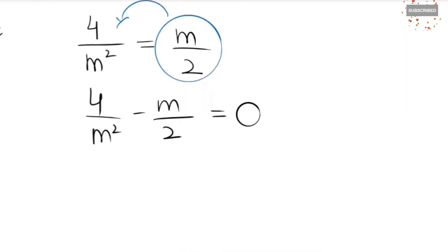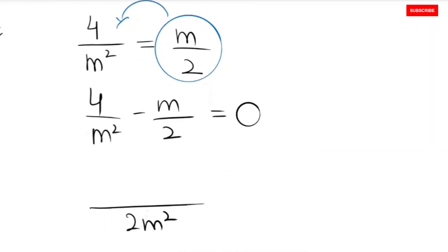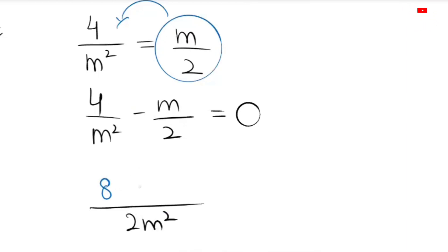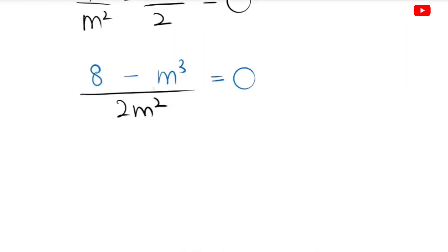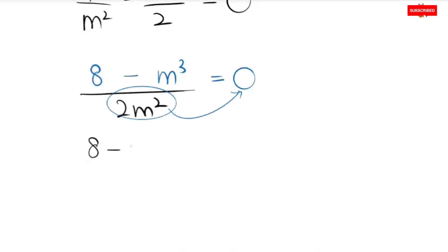Now I am going to take the LCM, which is 2m squared. The m squared terms cancel, and 4 times 2 gives 8, and the 2s cancel, giving m cubed. The denominator multiplies to the right-hand side, so the remaining expression is 8 minus m cubed is equal to 0.